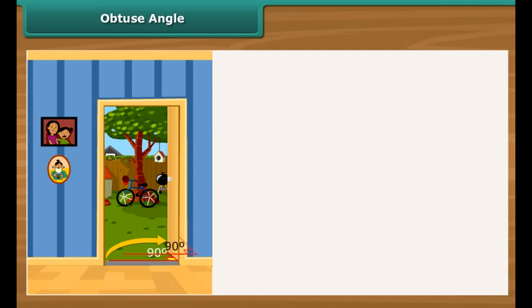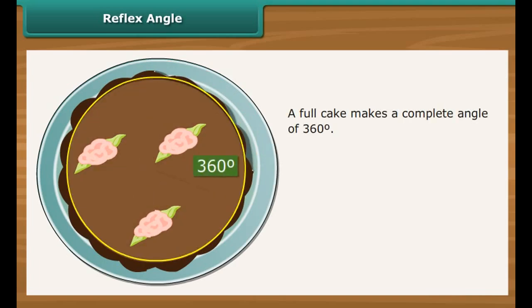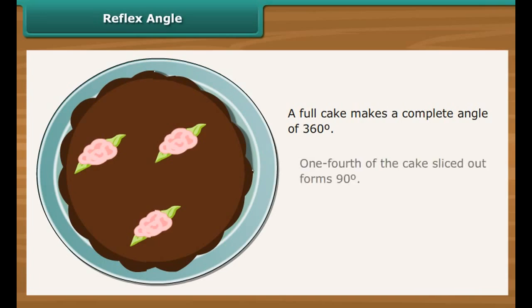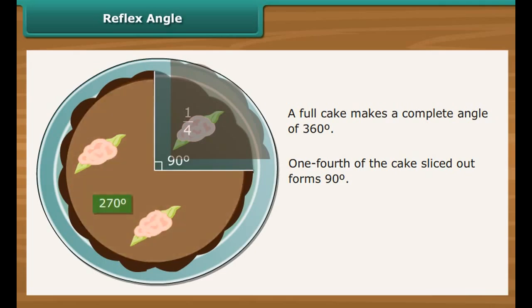Obtuse angle: Going back to the picture of an open door — if you push the door further to the right, the measure of the angle will exceed 90 degrees. Angles that measure more than 90 degrees are called obtuse angles. Reflex angle: Look at a cake — one fourth of it has been sliced out. A full cake makes a complete angle of 360 degrees. One fourth of the cake sliced out forms 90 degrees. The cake that remains forms 270 degrees. Angles greater than 180 degrees are called reflex angles.